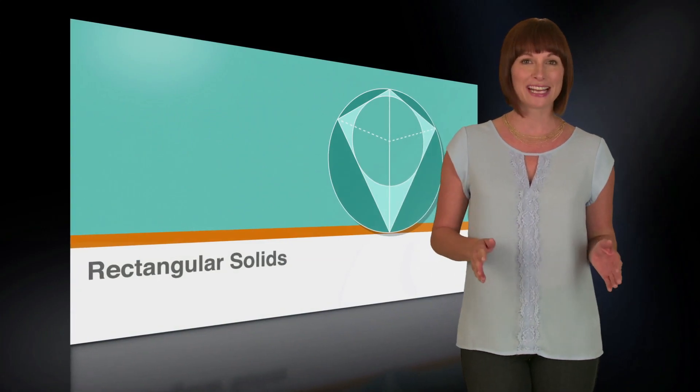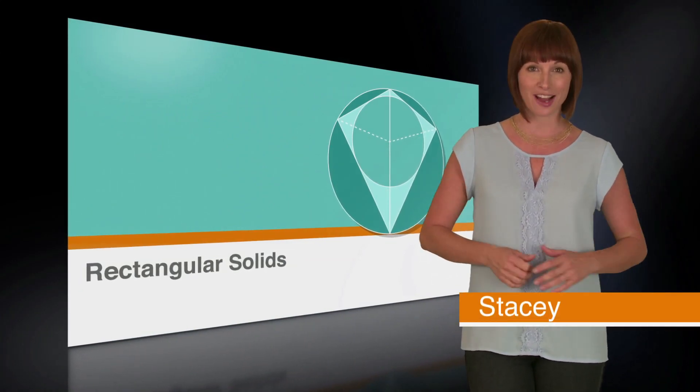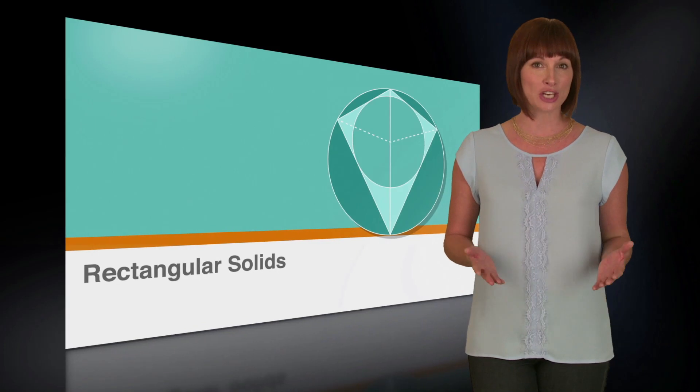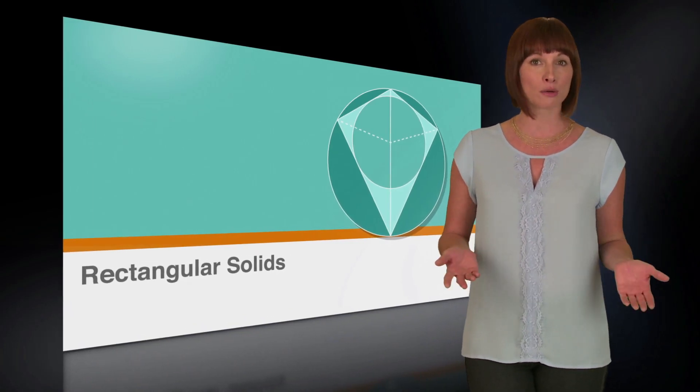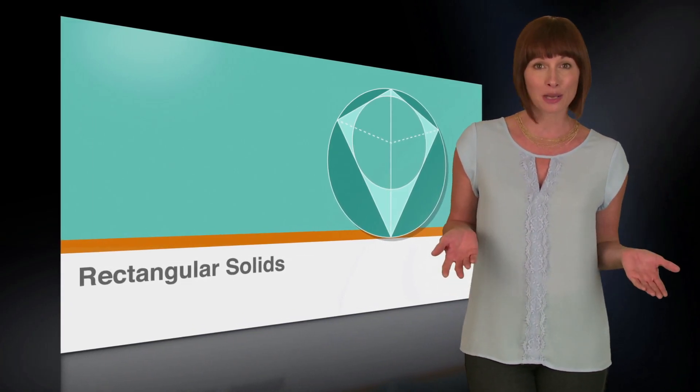One of the most common shapes on the SAT is the rectangular solid, which is just a 3D shape with six sides, all of which are rectangles. Basically, we're talking about boxes here. In this lesson, we'll go over calculating the volume and the long diagonal of a rectangular solid.